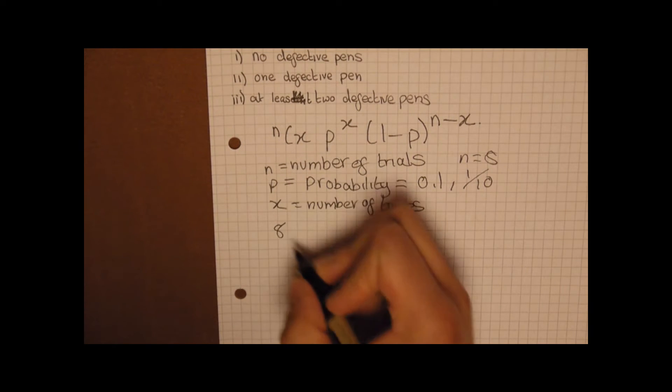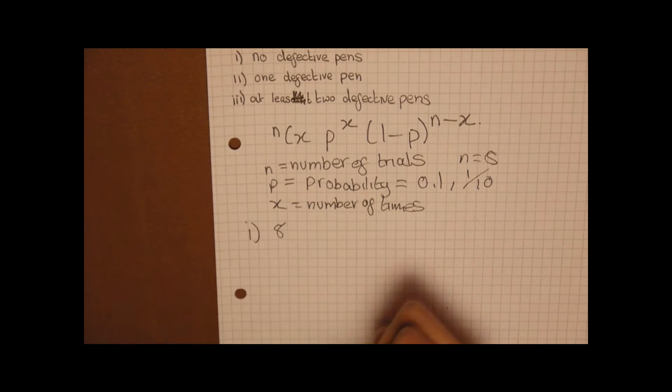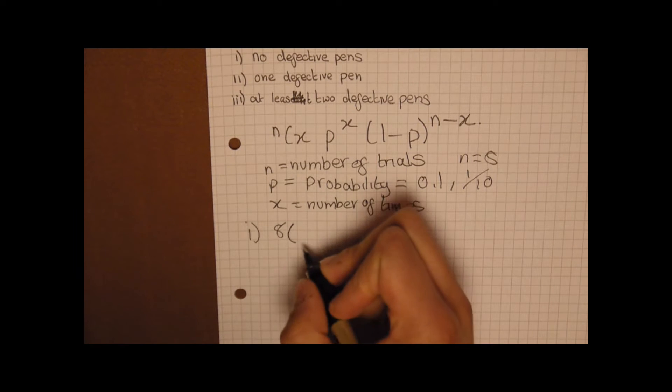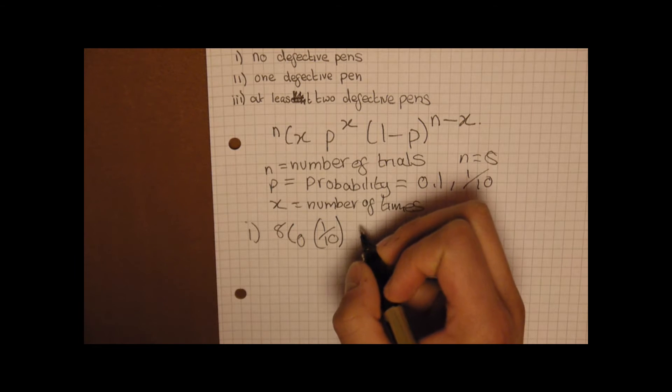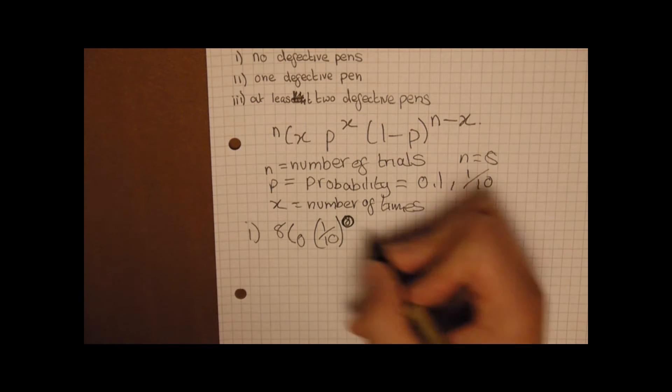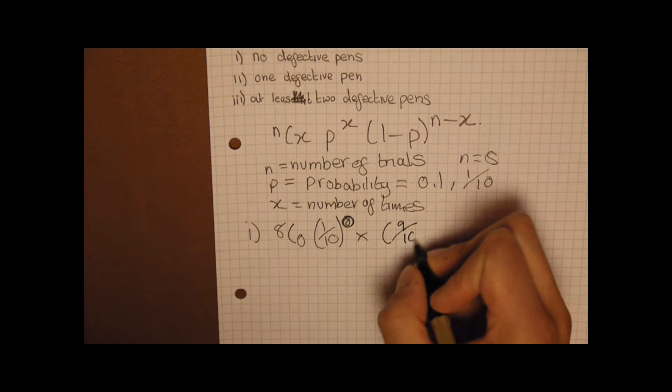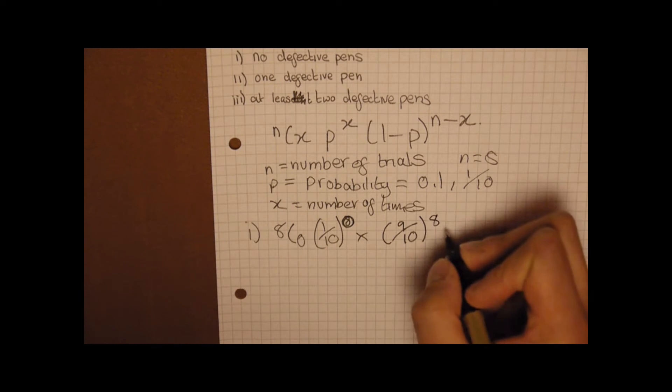Therefore it's 8C0, then we've got p which is 1 tenth to the power of 0 times 9 tenths to the power of 8.